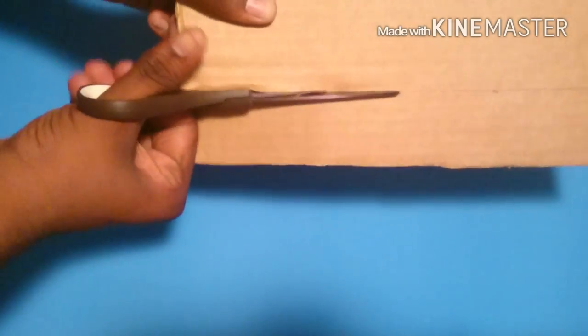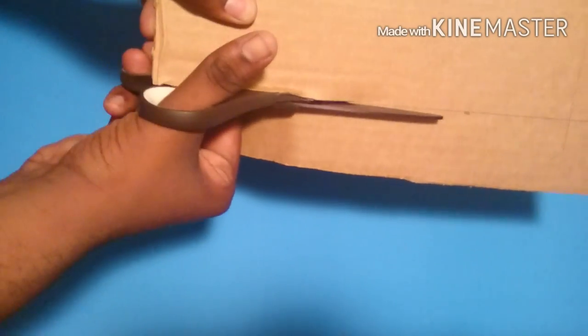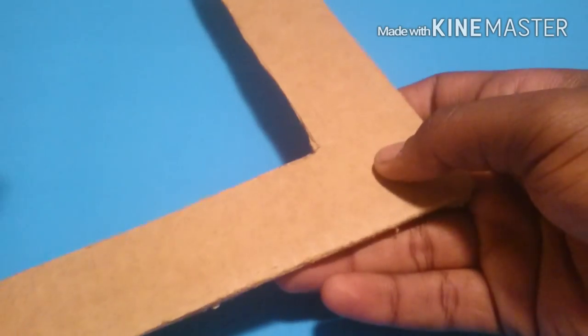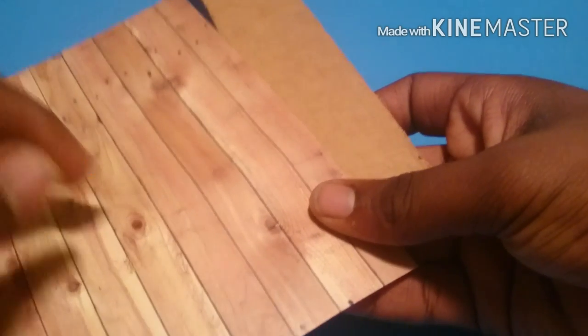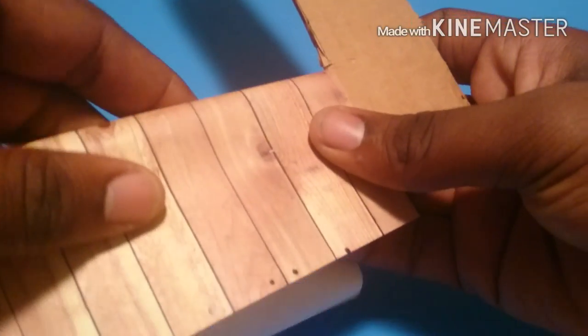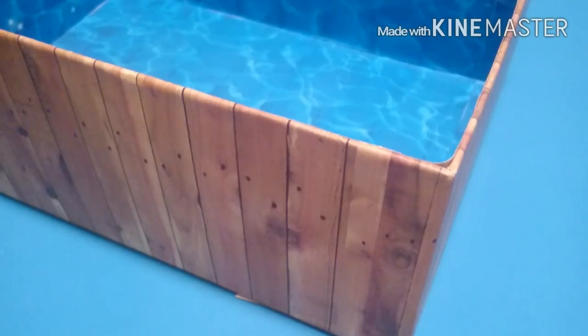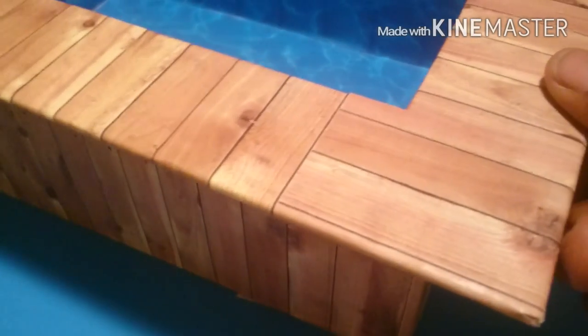Now I'm going to cut it out. Now I'm going to cover it with more scrapbook paper. Now I'm going to glue it onto one of the corners of the box.